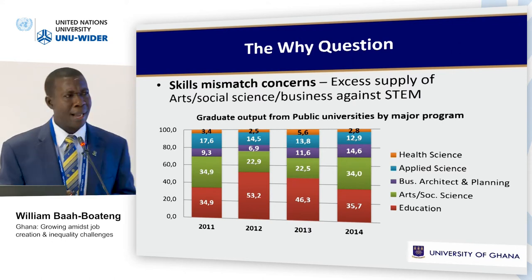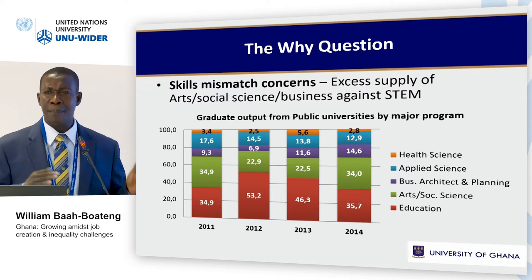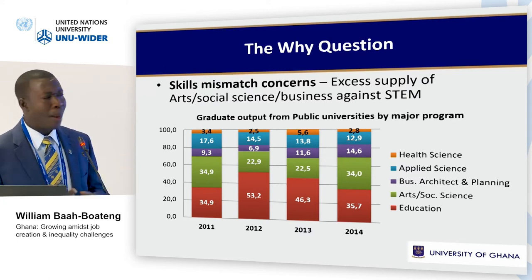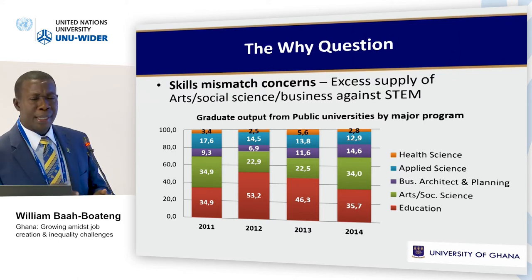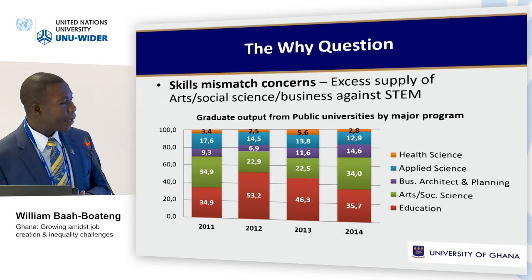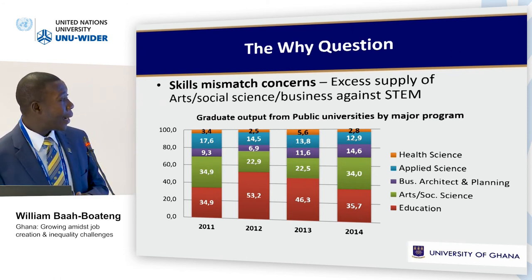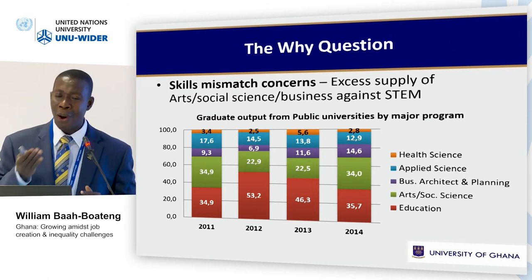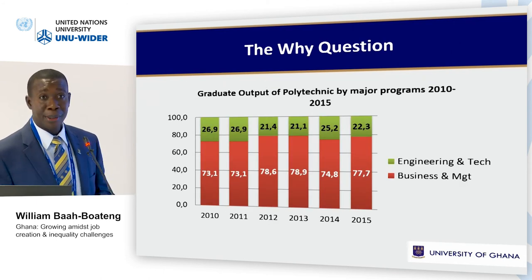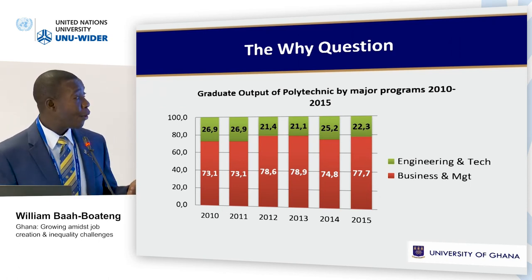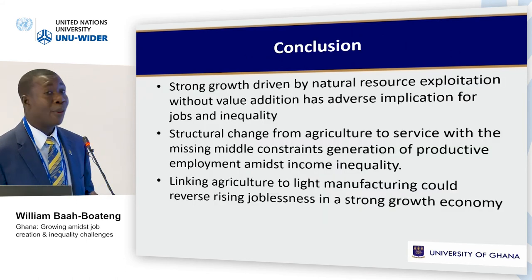There is also a skill mismatch concern in Ghana regarding humanities versus STEM. Between 2011 and 2014, educational output from public universities favored humanities: social science and education accounted for about 60 to almost 70 percent of output in 2014, while business, architecture, applied science, and health accounted for the remaining 30 percent. The same situation is found in technical universities — engineering and tech is just 2.3 percent in 2015, compared to 77.7 percent for business and management.